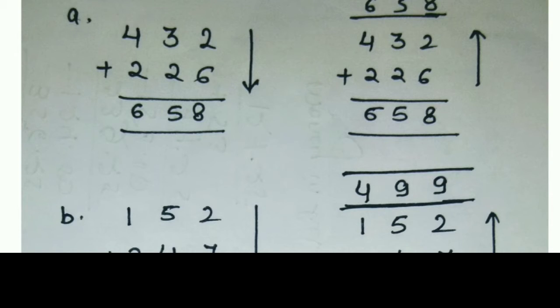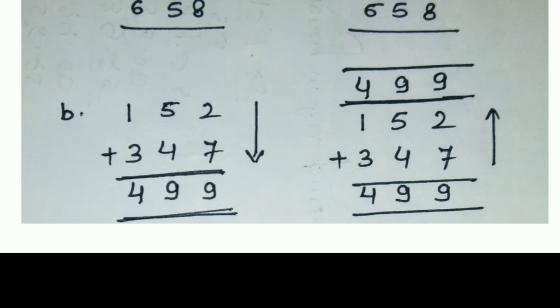432 plus 2 is 26, we will get 658 by doing down. Now the same thing we will do it up, same answer we will get. 6 plus 2 is 8, 3 plus 2 is 5, then 4 plus 2 is 6. One more question I have solved here. 152 plus 3 is 47, 2 plus 7 is 9, 4 plus 5 is 9, 3 plus 1 is 4. Same thing we will do it here. 7 plus 2 is 9, 4 plus 5 is 9, 3 plus 1 is 4. Rest question, do it yourself.